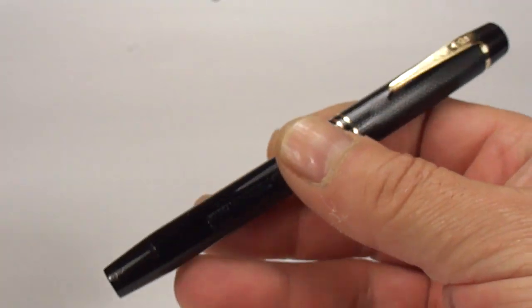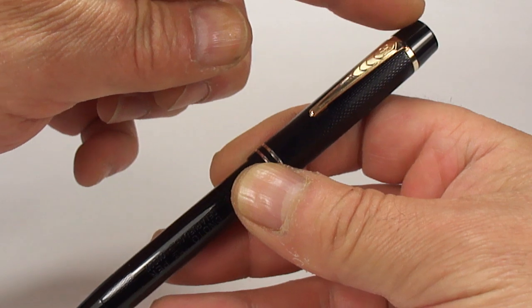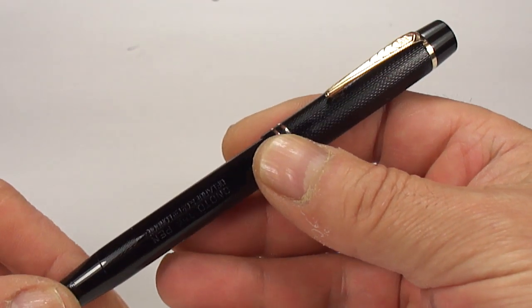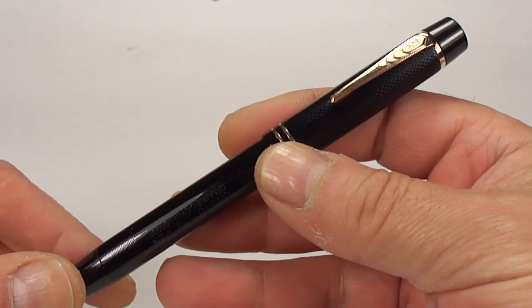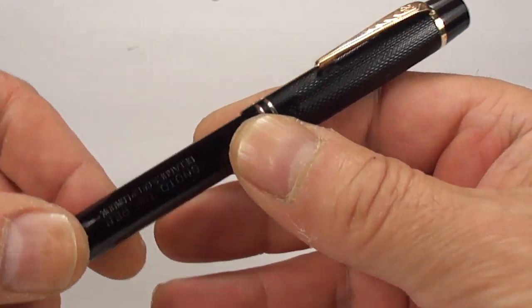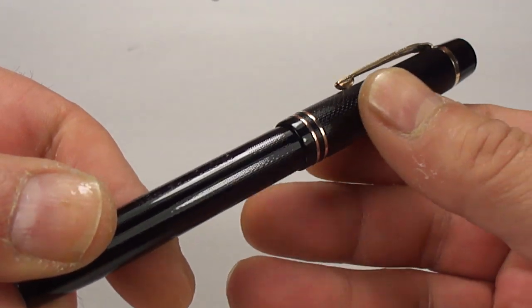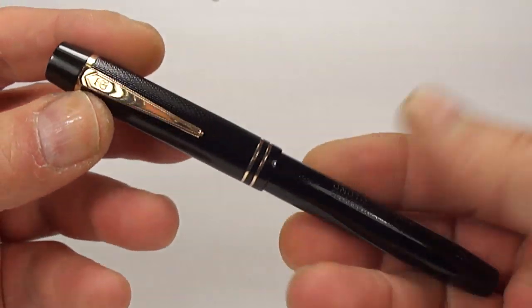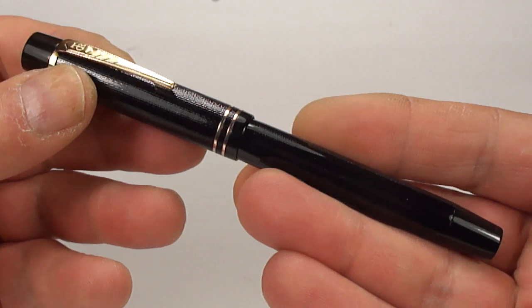As I say, this particular one is black hard rubber. However, the size of the pen from the top of the cap to the bottom of the barrel is approximately 135mm capped. Around the barrel here, it's approximately 11mm in diameter. All in all, lovely pen.